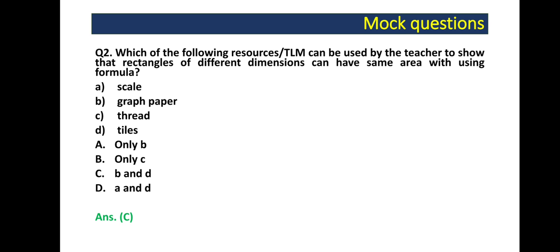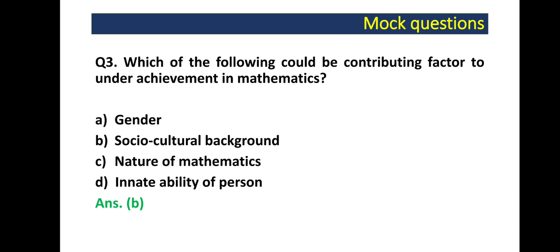Question 3: Which of the following could be contributing factor to underachievement in mathematics? Gender, socio-cultural background, nature of mathematics, innate ability of person. The answer for this is option B, socio-cultural background.